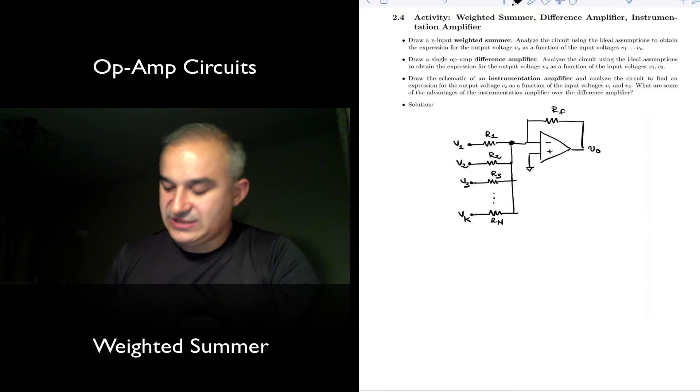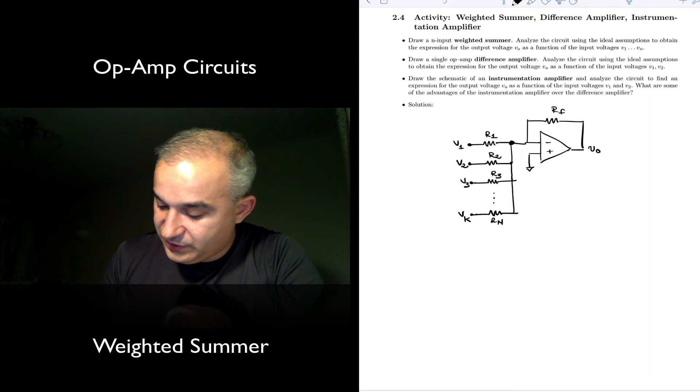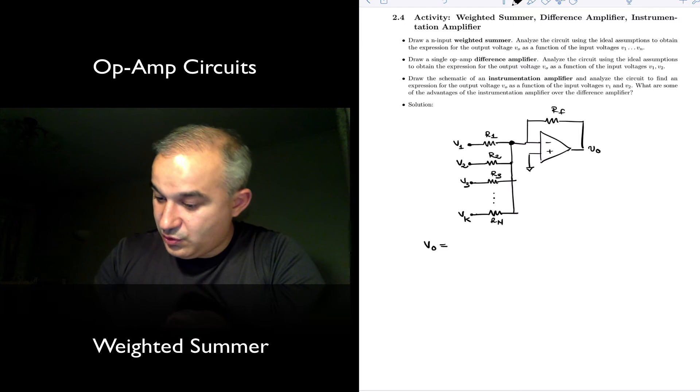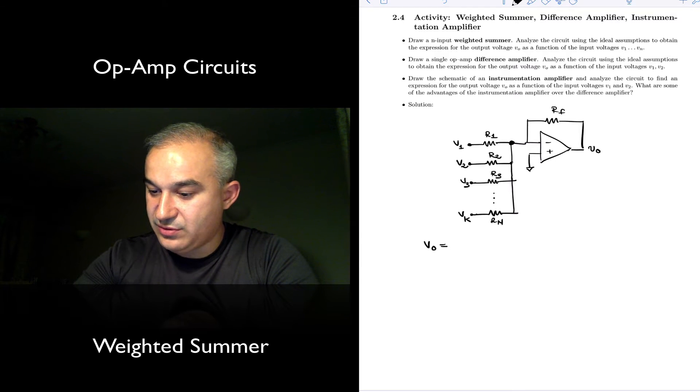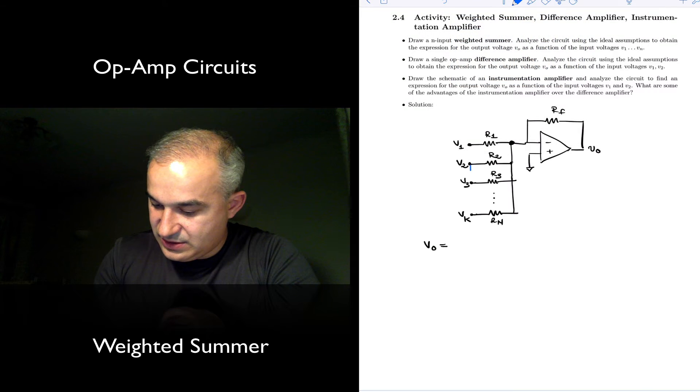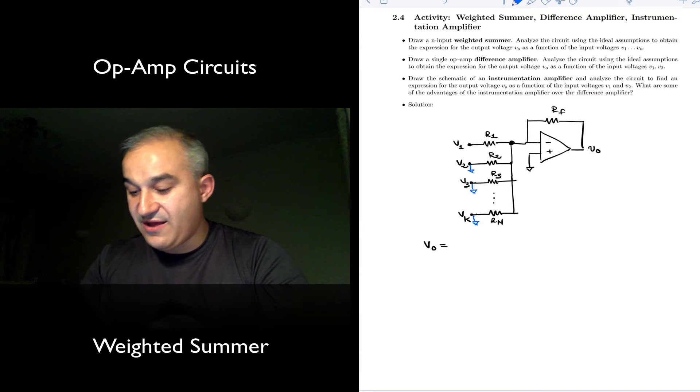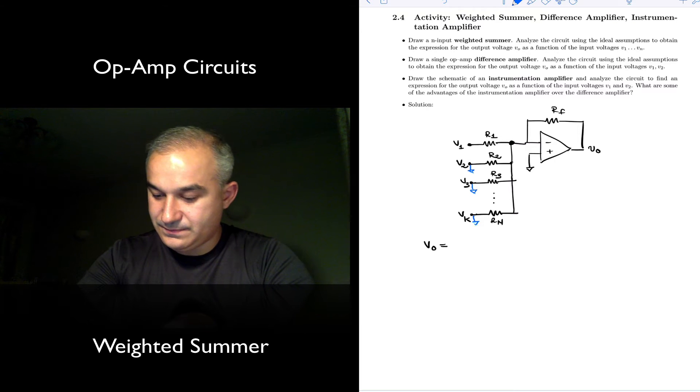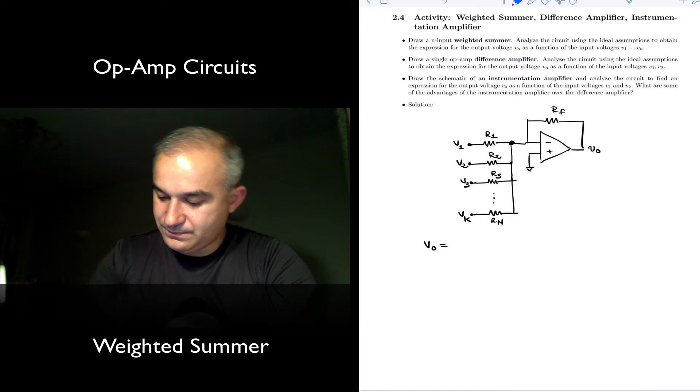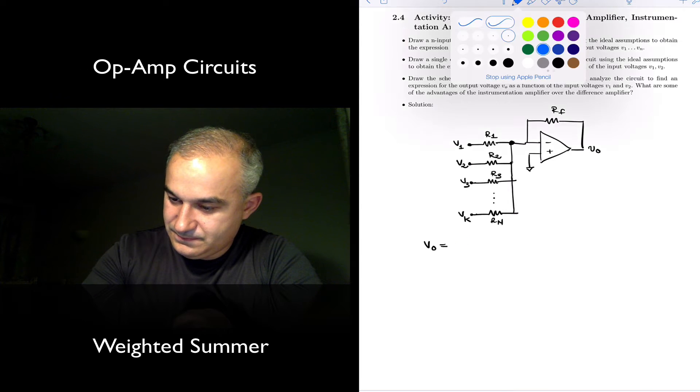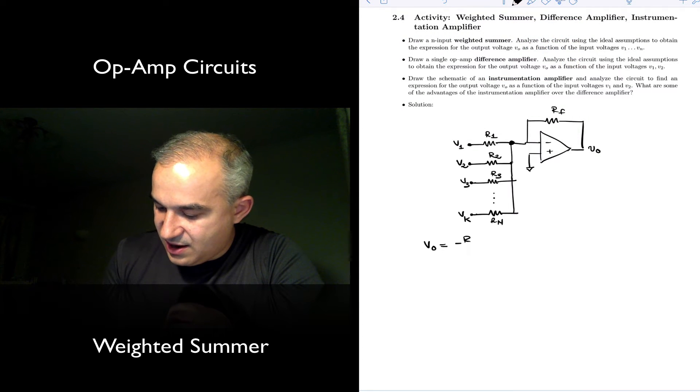In this case, the easiest way to do it will be applying superposition. Write the output V output is equal to, we already know the inverting amplifier if we ground all the inputs, this will be minus RF over R1 times V1.